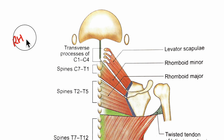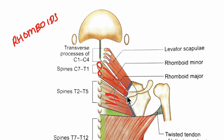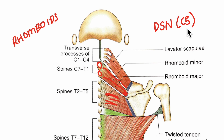Next let's learn about the rhomboids in detail. Here we have the rhomboid minor muscle and here is the rhomboid major muscle. The rhomboid minor originates from the lower part of the ligamentum nuchae and the spines of C7 and T1 vertebrae. It inserts into the base of the triangular area at the root of the spine of the scapula. Its nerve supply is the dorsal scapular nerve — C5 spinal nerve — and its action is retraction of the scapula.